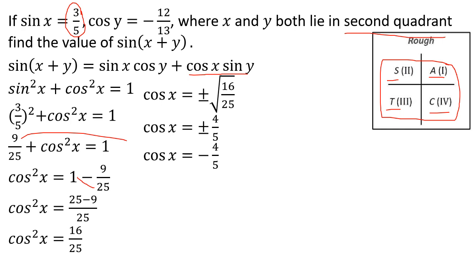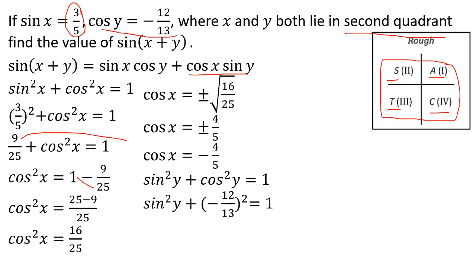Using the identity sin squared x plus cos squared x equals 1, and sin squared y plus cos squared y equals 1. With cos y equals minus 12/13: 12 squared is 144, 13 squared is 169, so sin squared y equals 1 minus 144/169 equals 25/169.